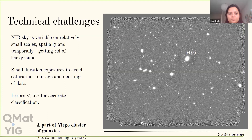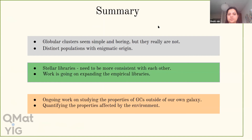To summarize: globular clusters appear as simple stellar populations but actually have quite interesting properties with multiple populations even within one cluster. We need more work on stellar libraries to make theoretical and empirical libraries more consistent. The ongoing work involves identifying globular clusters in elliptical galaxies and galaxy clusters to study the impact of environment on their properties. Thank you.